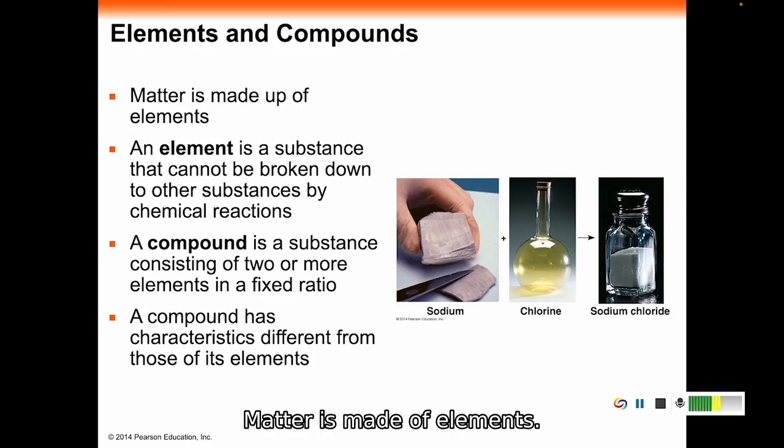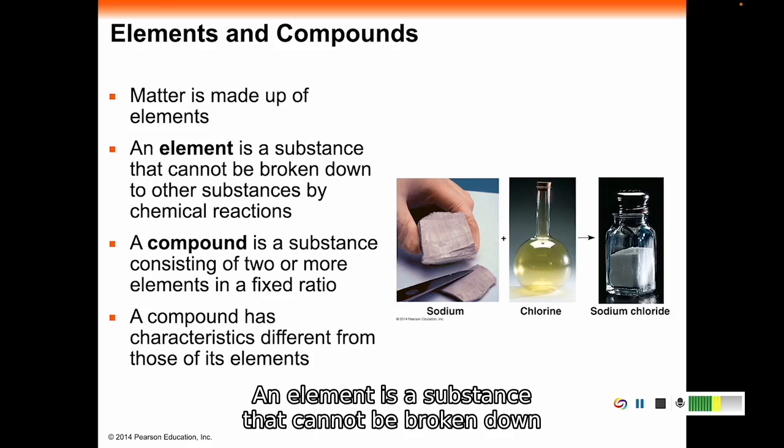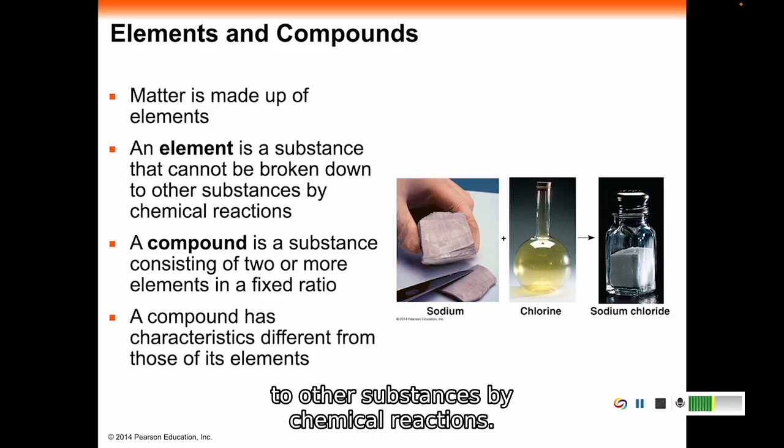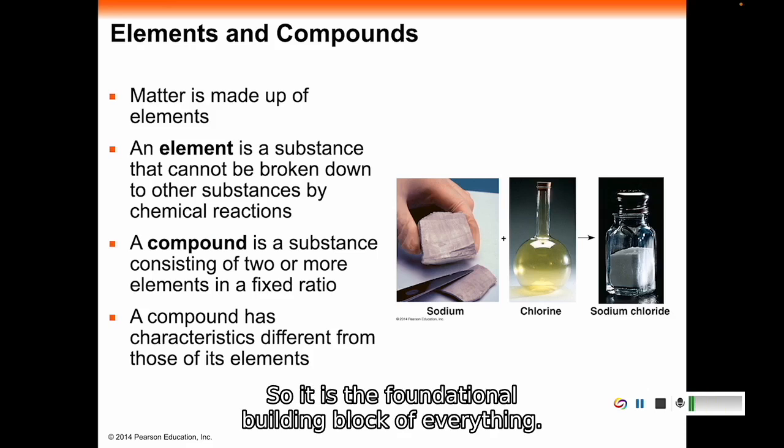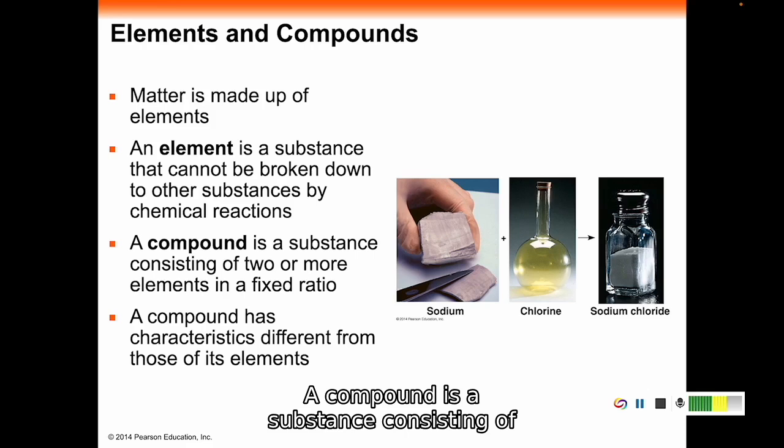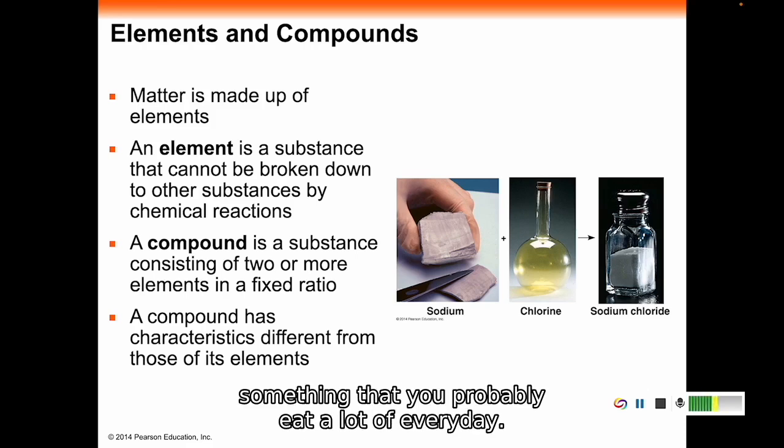Matter is made of elements. An element is a substance that cannot be broken down to other substances by chemical reactions. It is the foundational building block of everything. A compound is a substance consisting of two or more elements in a fixed ratio. Compounds have characteristics that are different from its elements. Sodium chloride is a compound. Here on the right, it is table salt.